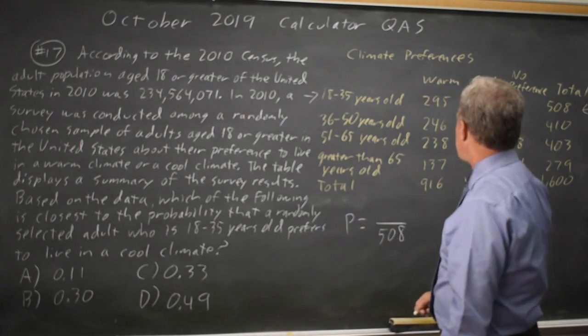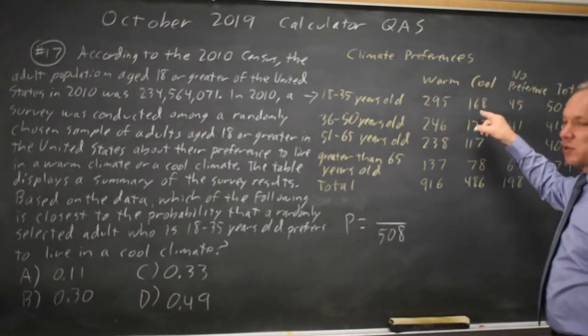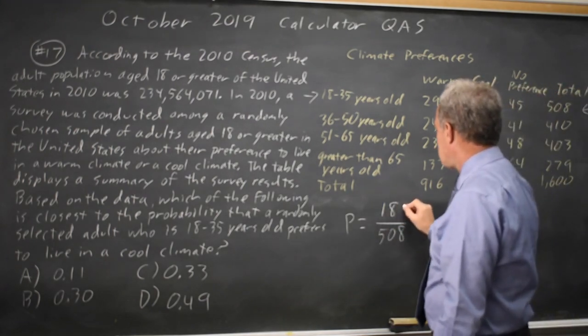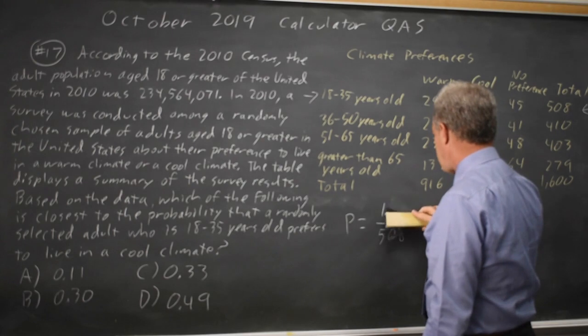Your probability is your numerator. Those in that, among that 508 who prefer cool, which is 168.